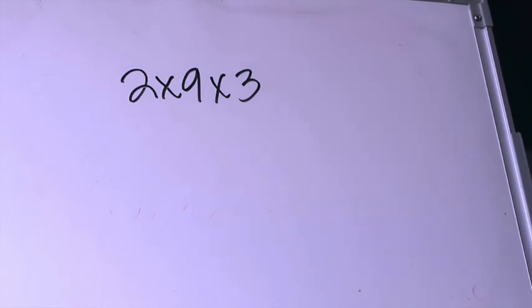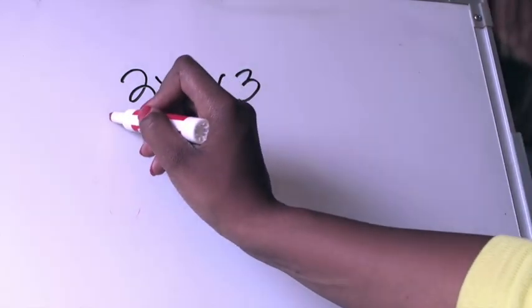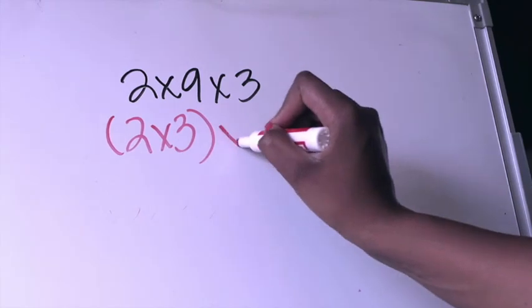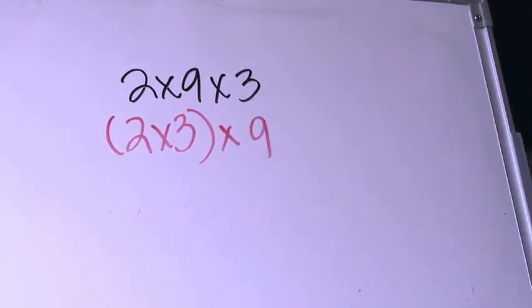I'm going to look at this and I'm going to pull the factors 2 and 3 together because I think that those will be my easiest ones to solve. I'm going to put those in parentheses so that they are grouped together and I'm going to multiply that product by 9.